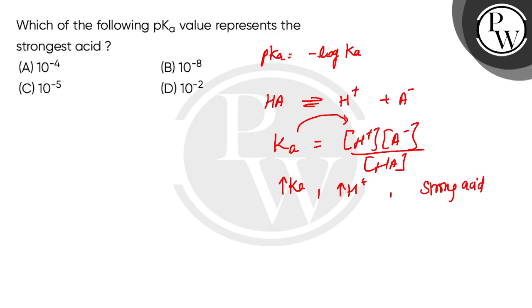And how is the Ka and pKa relation? Because here it is negative, so negative is the inverse relationship. So if the Ka is higher, then the pKa should be lower.